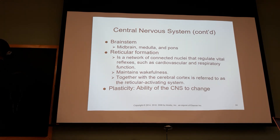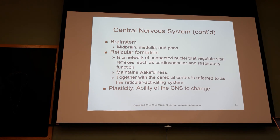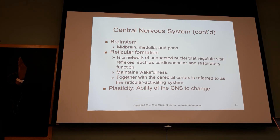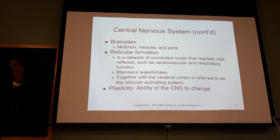The reticular formation is a network of nuclei coming up from the brainstem through the thalamic area into the cerebral cortex. It keeps people awake — it's your wake center. If you knock out the reticular activating system, someone can be alive but constantly sleeping. On a neurological floor, you may see someone with a large bilateral hemispheric stroke just sleeping all the time — but put food in front of them and they'll eat. Their ability to stay awake is altered because they've knocked out the reticular activating system.